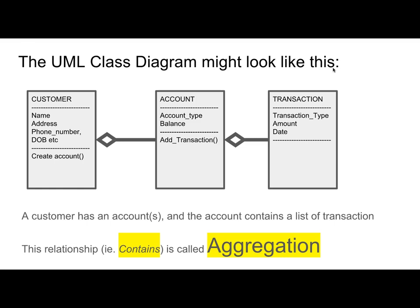I'd recommend that a customer, which you see on the left, contains a name, address, a phone number, date of birth, and stuff like that. It also contains a list of accounts, because the customer can have more than one account, which can be an array list or a plain array.